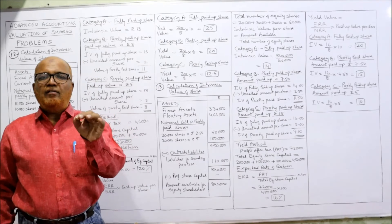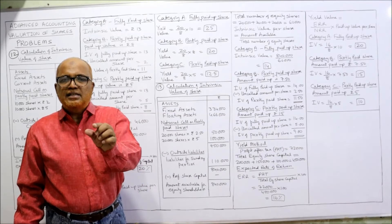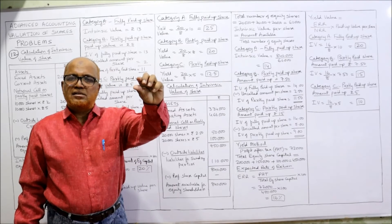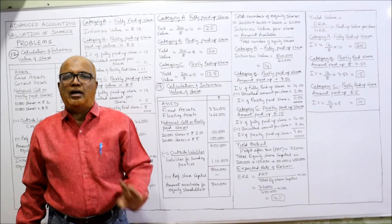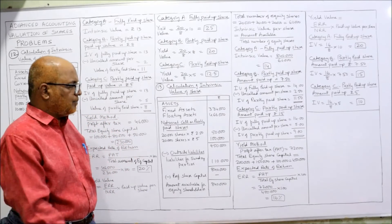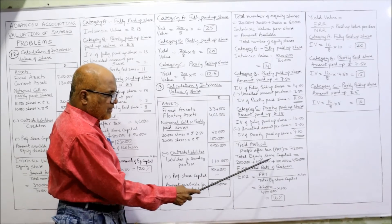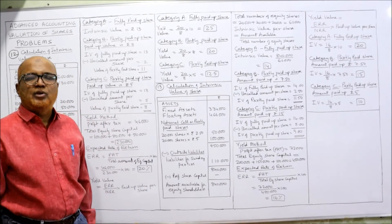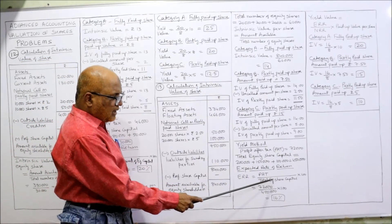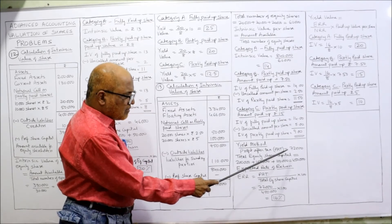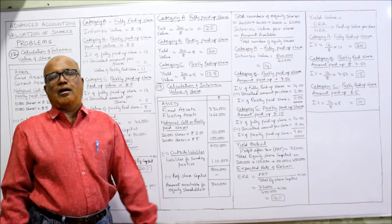For yield value we need the expected rate of return (ERR): profit after tax divided by total equity share capital, multiplied by 100. Profit after tax is 72,000. Total equity share capital: 2 lakh (fully paid) + 1,50,000 (at 7.5 per share) + 1 lakh (at 5 per share) = 4,50,000. ERR = 72,000 divided by 4,50,000 into 100 = 16%.